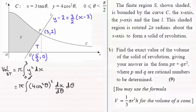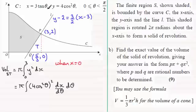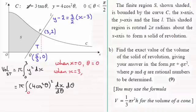Because we've changed the integral to be with respect to θ, we need to change the limits. When x = 0, substituting into the parametric equation gives tanθ = 0, so θ = 0. For the upper limit when x = 3, substituting gives 3 = 3tanθ, which reduces to tanθ = 1. The inverse tan of 1 in radians means θ = π/4. So the new limits are 0 to π/4.